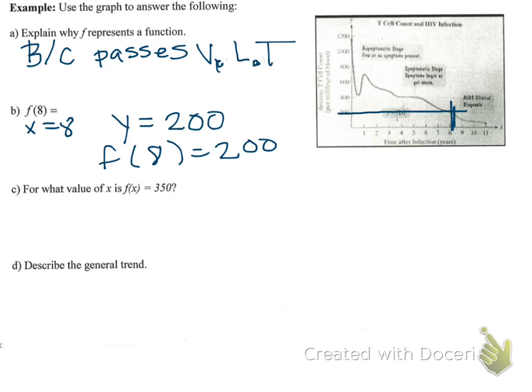Letter C says for what value of x is f(x) equal to 350? So now they're giving you the y value. They're telling you that y equals 350 and they want the x value. So 350 is somewhere around here, and you go over. And I would say it matches with an x equals 6 years.